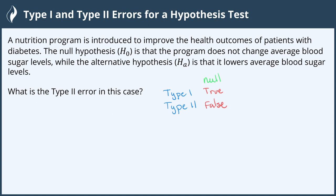And because we are dealing with an error, a type 1 error is when the null hypothesis is true and we don't accept it as such, so we reject the null hypothesis. A type 2 error is when the null hypothesis is false, but we fail to reject it.